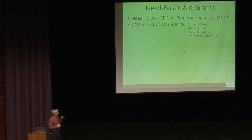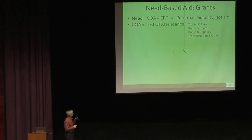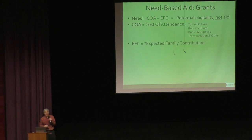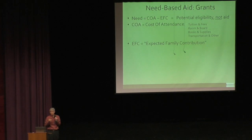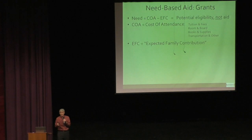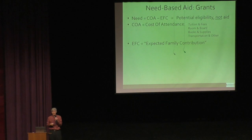COA stands for cost of attendance and is made up of four elements: tuition and fees, room and board, books and supplies, and transportation and other miscellaneous expenses. EFC stands for expected family contribution, and it's the most misleading acronym in the English language. If you read those words in English, you think that's what you're expected to pay — but that's not the case. Almost everyone pays more than the EFC, particularly at colleges that award aid primarily based on need.